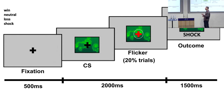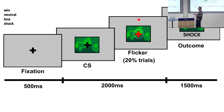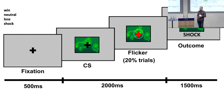To ensure participants were paying adequate attention to the task, 20% of the trials had red flickers to which participants needed to respond with a button press as quickly as possible.